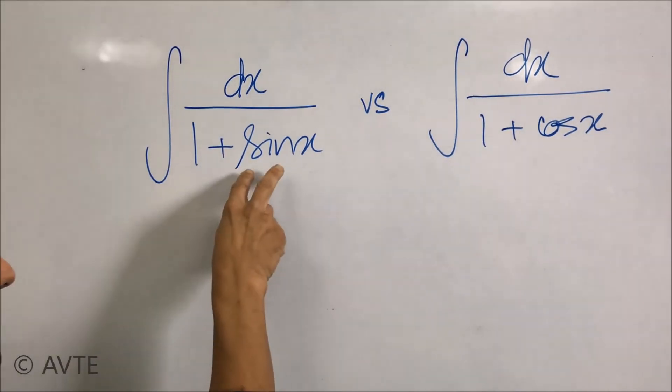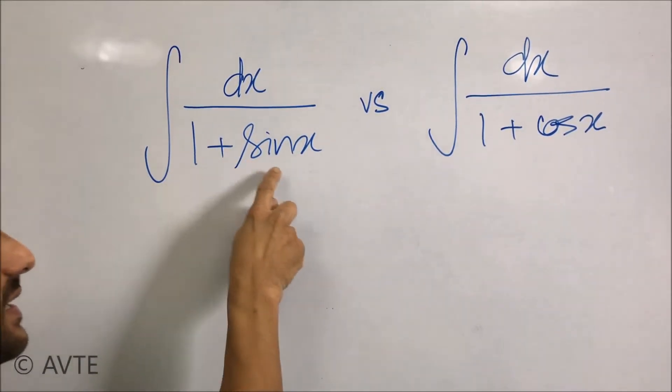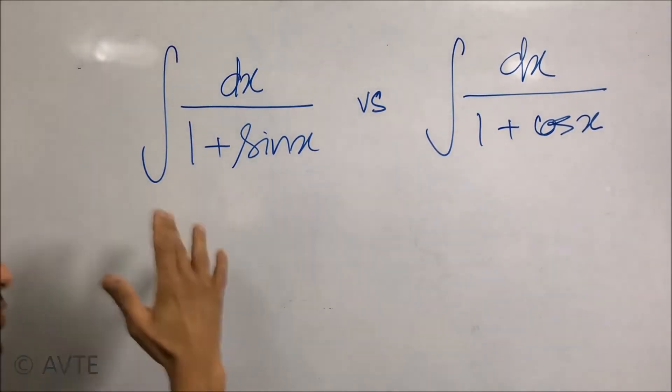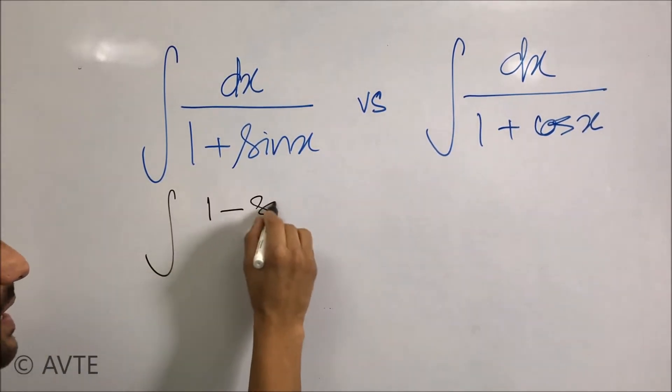But the best approach for this question is do not go into half angle and rationalize it. That is, you multiply and divide by 1-sin x.